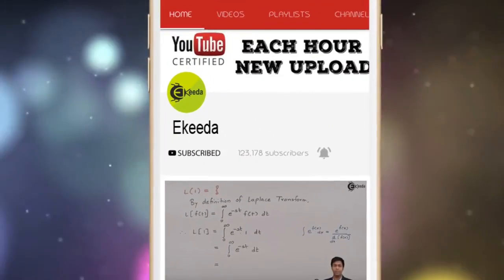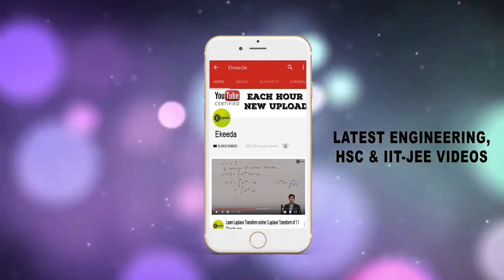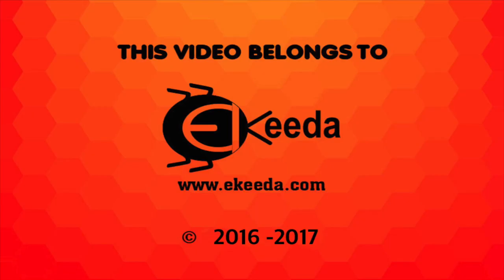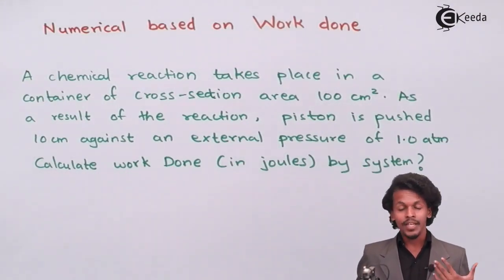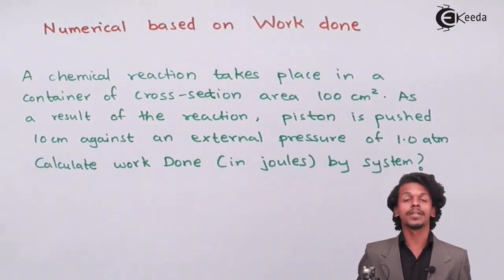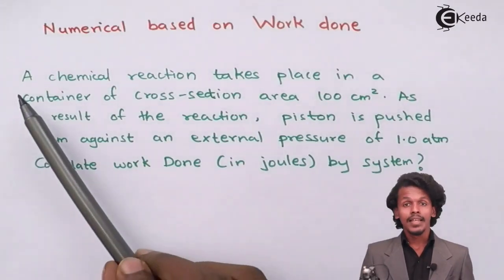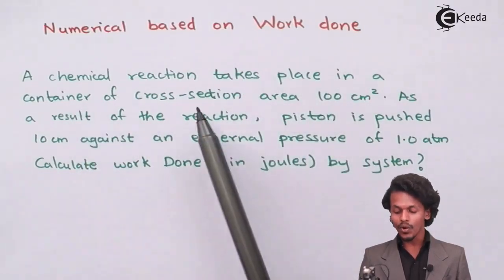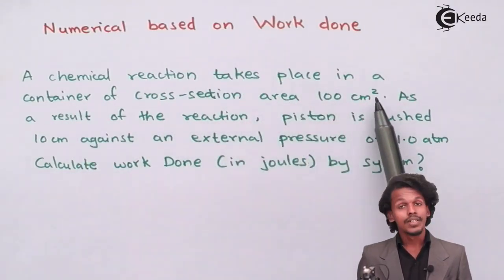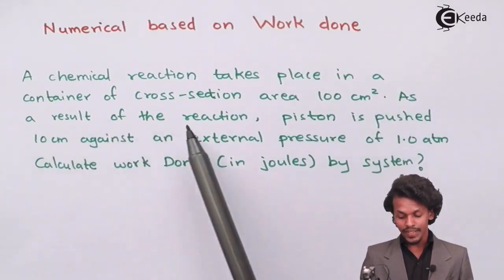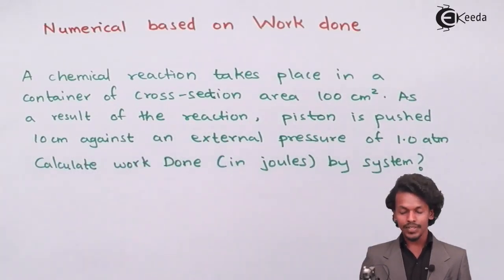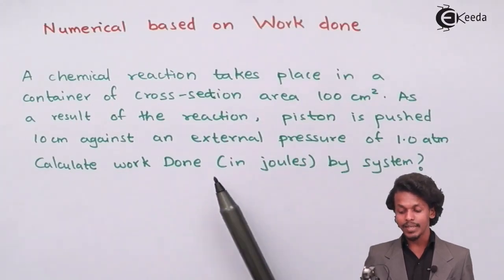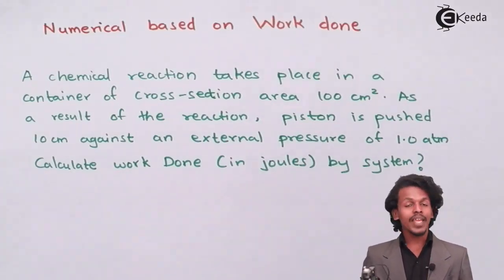Subscribe to the Ikeda channel and press the bell icon to get updates about latest engineering, HSE, and IIT JEE Main and Advanced videos. Here is a new problem on how to calculate the work done during isothermal expansion of a gas in an irreversible process. A chemical reaction takes place in a container with a cross-section area of 100 cm², and the piston is pushed 10 cm against an external pressure of 1 atmosphere. We have to calculate the work done in Joules.